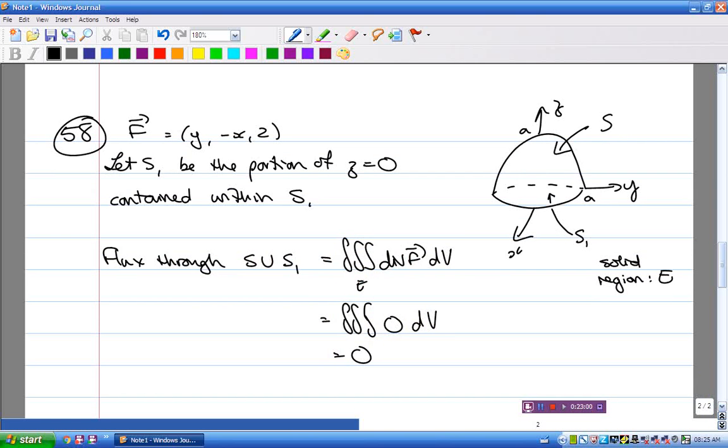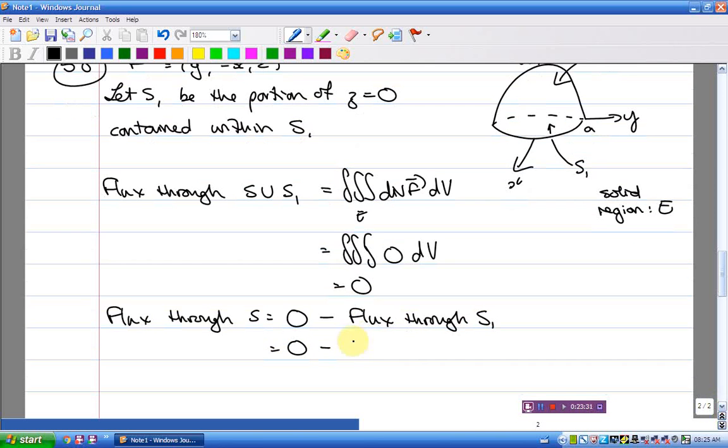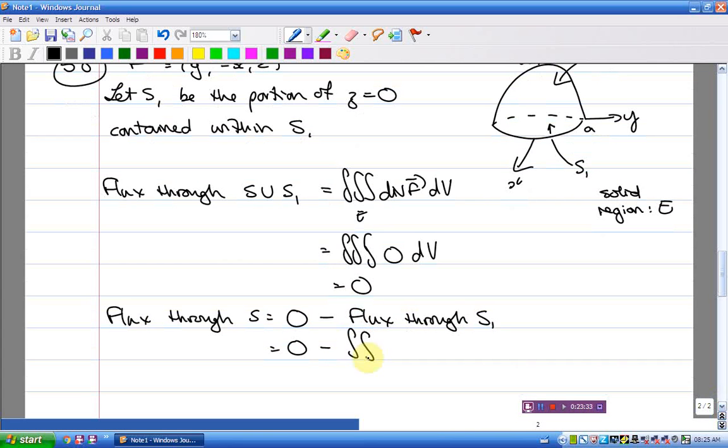So flux, just like the previous one, flux through S union S1 is equal to triple integral of div F dV which is 0, which means if we look at the hemisphere and the disk together, altogether there's net zero flux, which means as much is flowing in as is flowing out. However, we haven't been asked to look at that. We've only been asked to look at the flux through the hemisphere.